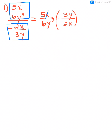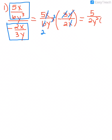I see an x in the numerator that will cancel out with the x in the denominator. Then we have one y in the numerator and three y's in the denominator, so one of those will cancel out in each — the y to the third on the bottom becomes y squared. This 3 will go into 6 two times. Since we multiplied a positive fraction times a negative fraction, our answer is going to be negative.